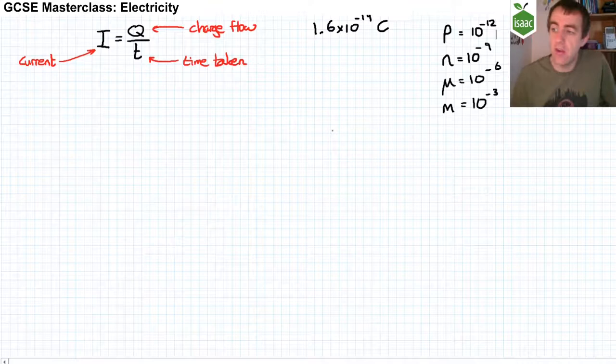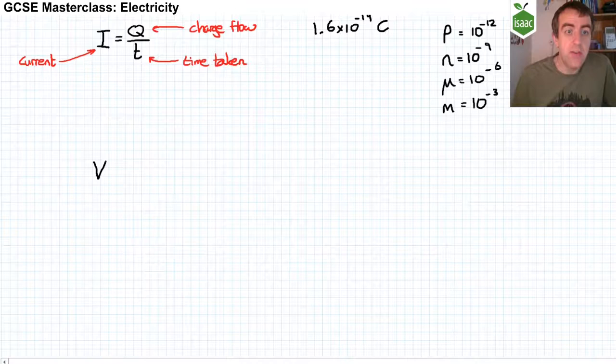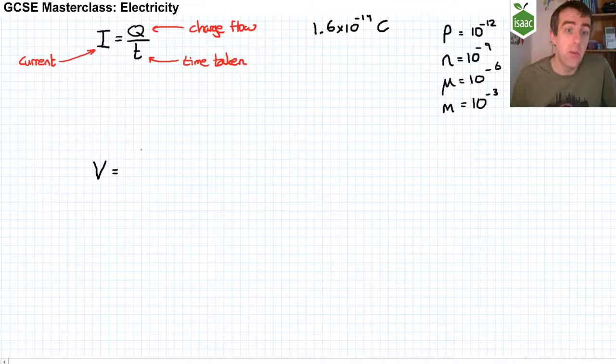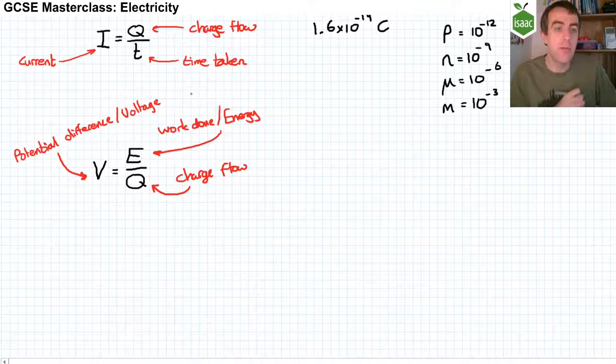The second equation you need is for potential difference, sometimes called voltage, so we use the letter V. Potential difference is equal to the amount of work that is done per coulomb of charge that flows through a component. So V equals work done, we'll use E for energy, divided by the amount of charge Q. One volt of potential difference is equal to one joule of energy deposited on a component per coulomb of charge that flows through it.